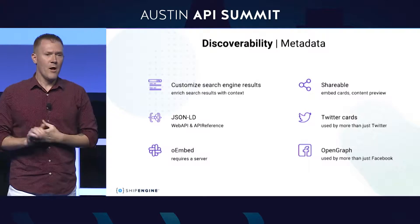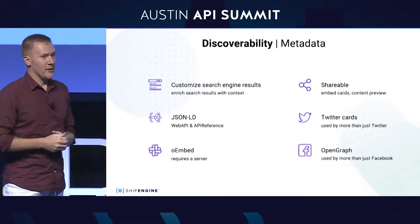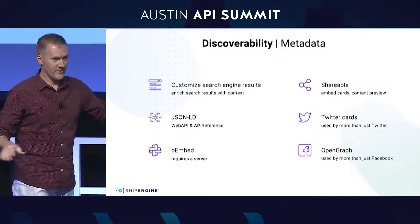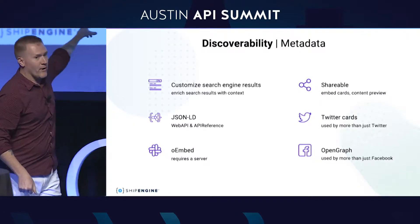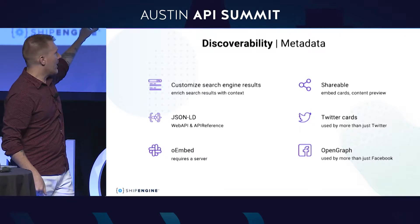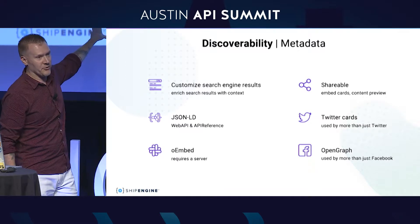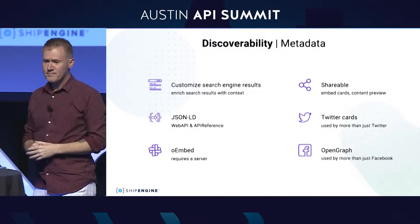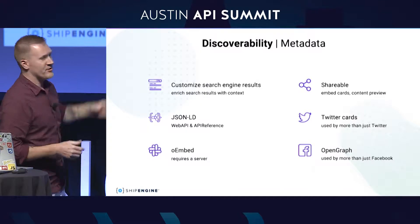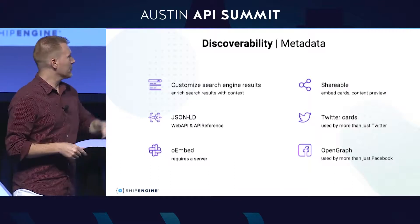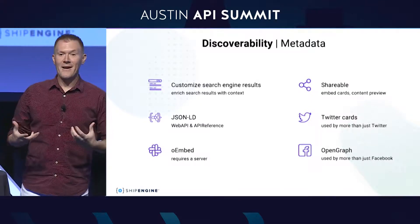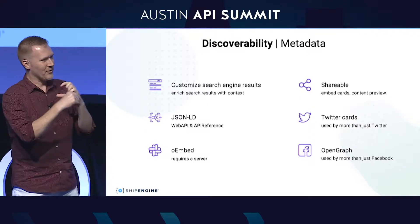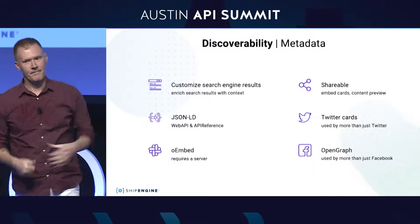Twitter cards and Open Graph: obviously if you want to encourage shareability on Twitter and Facebook, those are important formats. But actually those two formats are used by everybody — Slack, for example, defaults to oEmbed, but if you don't have oEmbed (because it requires a standalone server), it will fall back to either Twitter cards or Open Graph. What does all this stuff give you? JSON-LD gives you the ability to customize your search results, and all these other formats provide metadata — you know how you've shared a link on Slack and you get that nice little preview image, a title, and a summary? All that comes from this metadata.